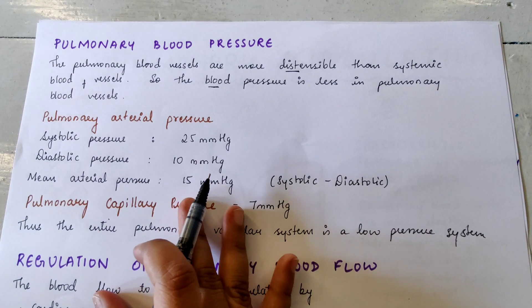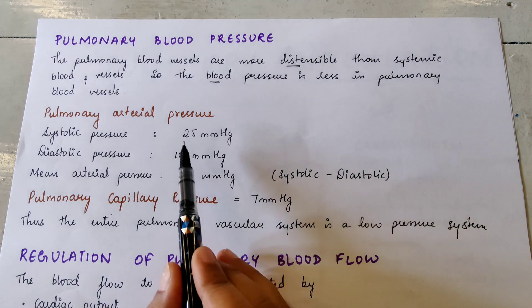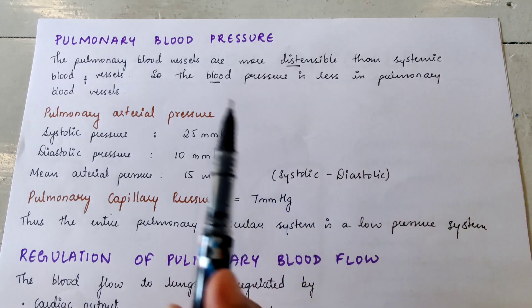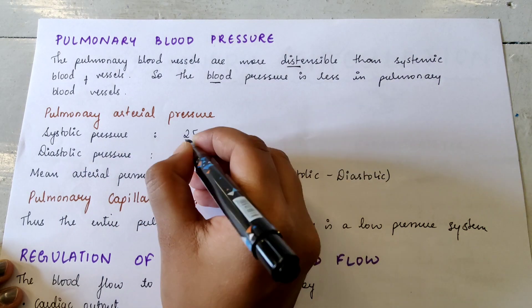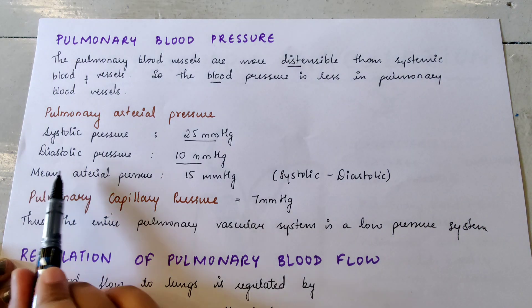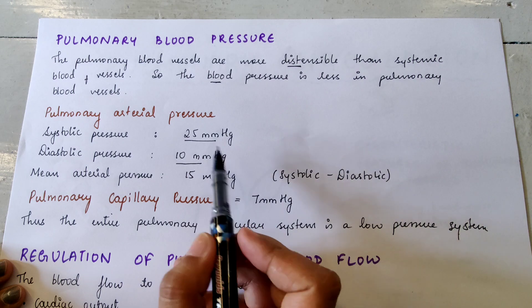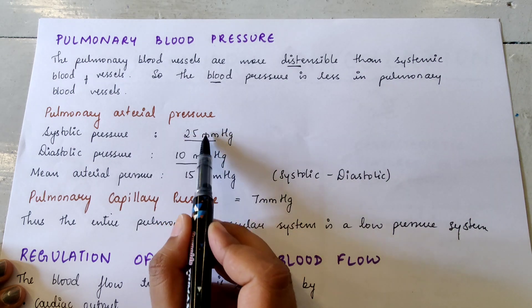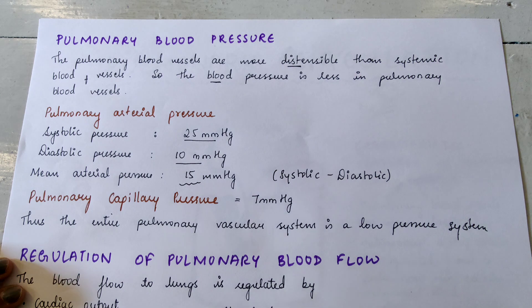Now let's look at pulmonary arterial pressure. The systolic pressure in the pulmonary arteries is 25 mmHg, the diastolic pressure is 10 mmHg, and the mean arterial pressure — which is systolic minus diastolic — is 25 minus 10, which comes to 15 mmHg.